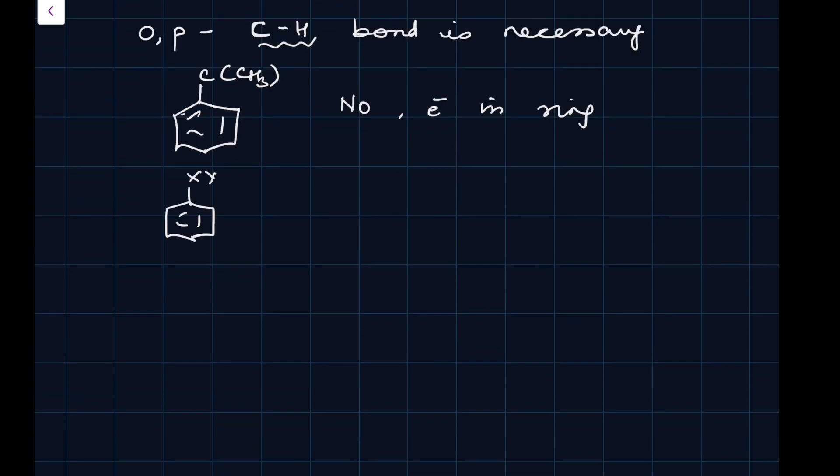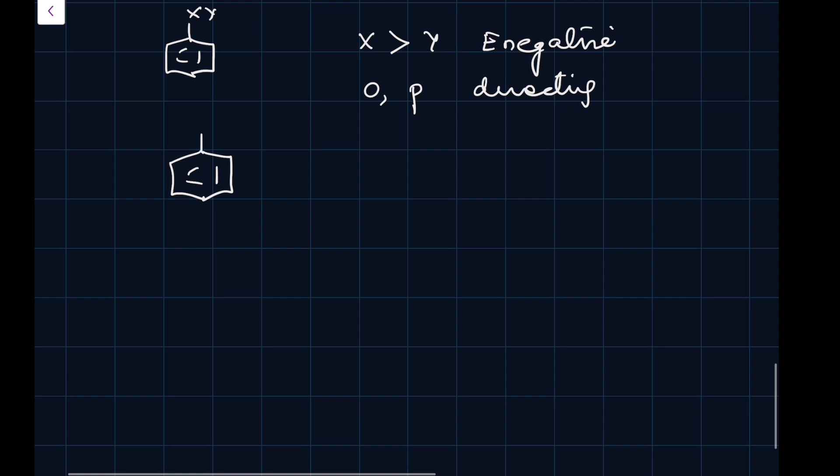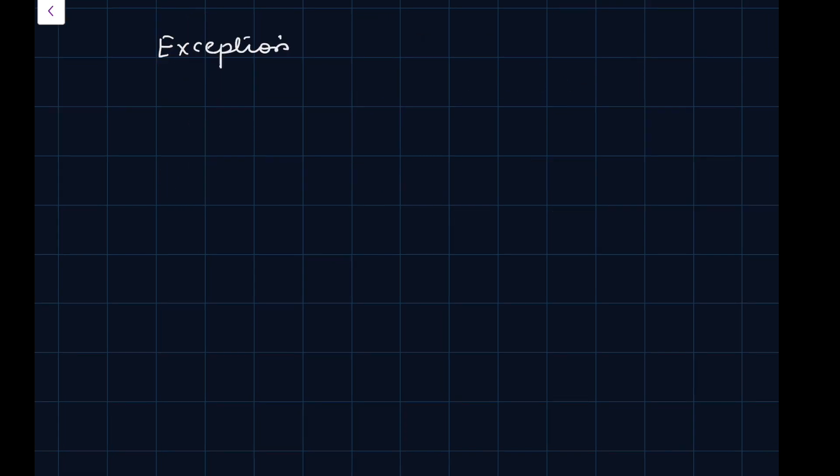If we have something like this, tert-butyl, there will be no electron in the ring. Electrons will not go in the ring because there is no CH bond. To sum it up, if this is X-Y, X is more electronegative than Y, if X is more electronegative than Y, it will be O-P directing. If it is a charged body minus or any other atom having negative charge, of course, they will be moved inside the ring. They will direct the incoming group at ortho and para positions.